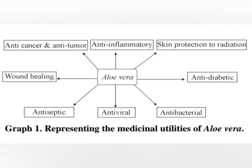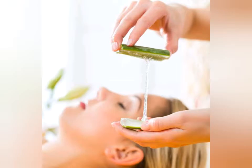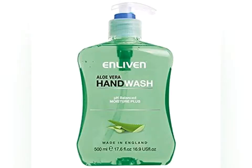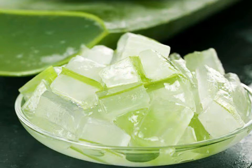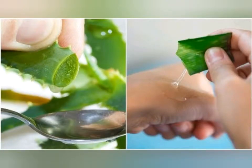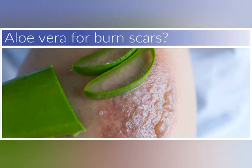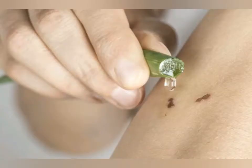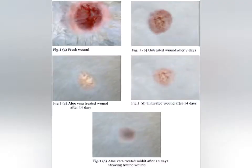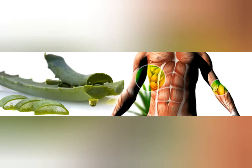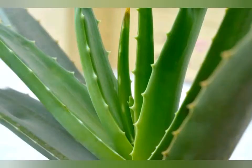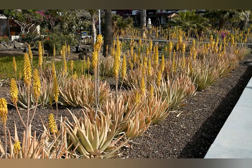Aloe vera compounds have many biological activities, including anti-cancer and anti-tumor activity, anti-inflammatory, sun protection and radiation protection, anti-diabetic, antibacterial, antiviral, antiseptic, and wound healing properties. Research has reported that the effective components for wound healing may be tannic acid, glucomannan (a mannose-rich polysaccharide), and gibberellin (a growth hormone). These components significantly increase collagen synthesis. Aloe gel not only increases the collagen content of a wound but also changes the collagen composition and increases the degree of collagen cross-linkage.